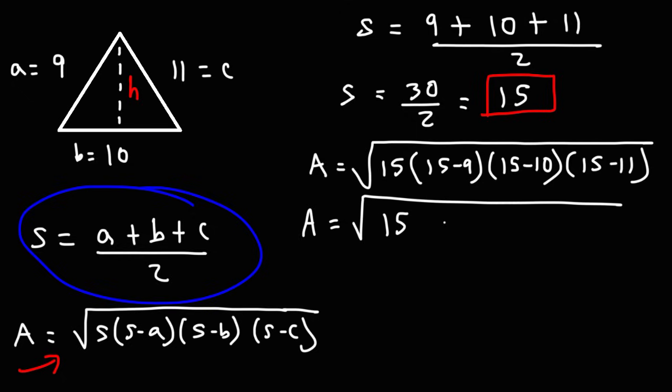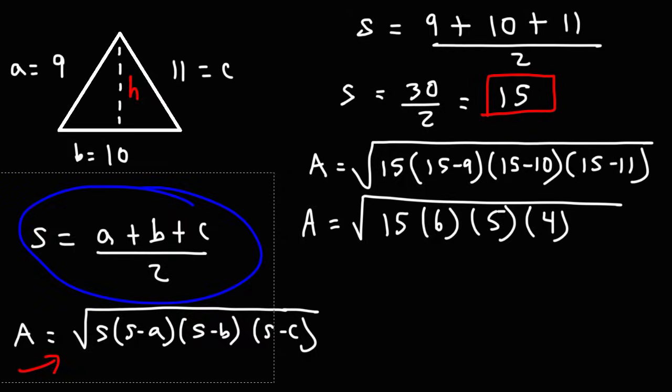So 15 minus 9 is 6. And 15 minus 10 is 5. And then 15 minus 11 is 4. So rather than plugging this whole thing into a calculator, let's see if we can simplify it so that we can get the exact value in this expression.